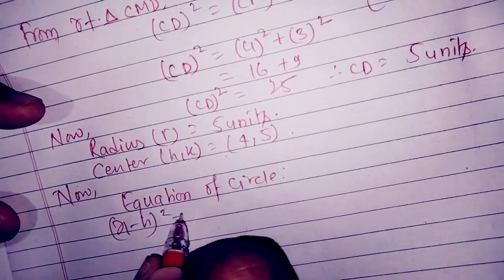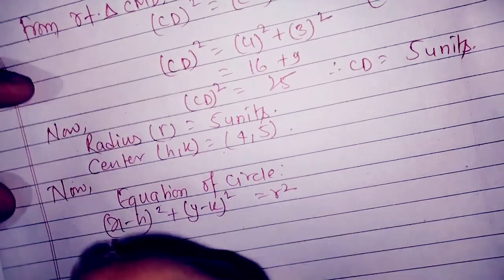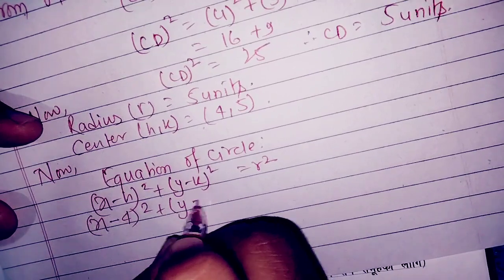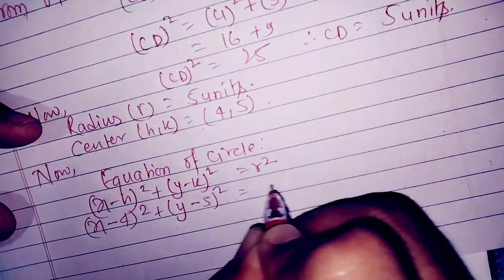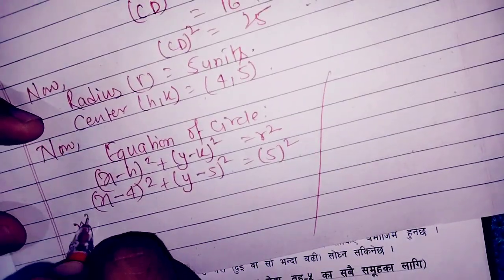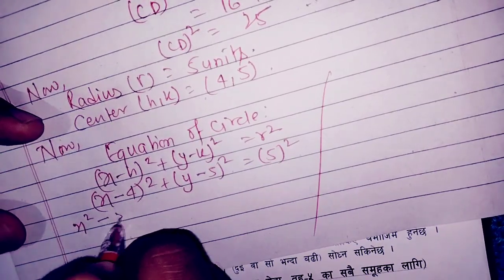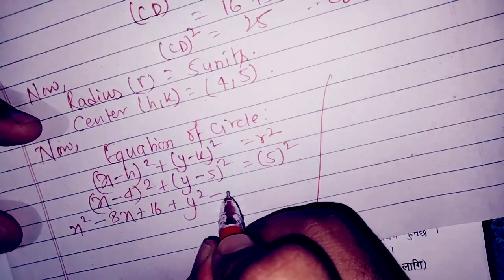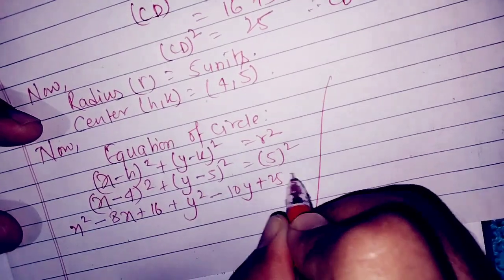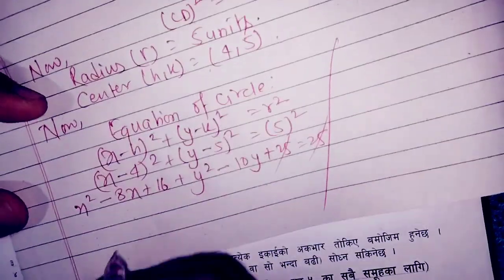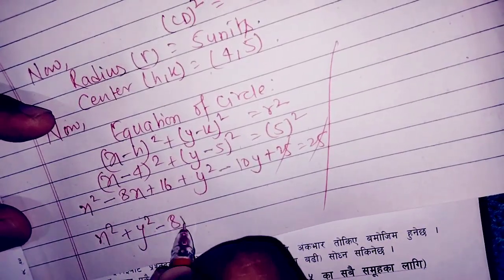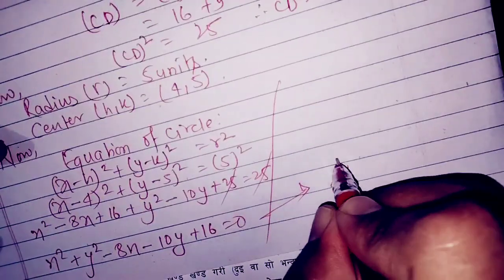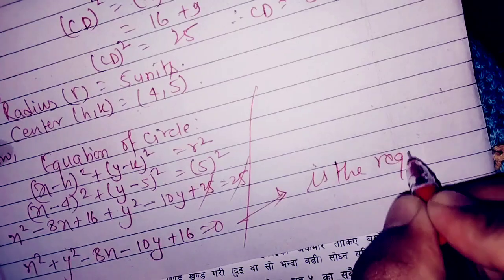The equation of a circle is (x - h)² + (y - k)² = r². Substituting h=4, k=5, r=5: (x - 4)² + (y - 5)² = 25. Expanding using (a - b)² = a² - 2ab + b²: y² - 10y + 25 = 25. The 25 cancels, giving x² + y² - 8x - 10y + 16 = 0. This is the required equation.